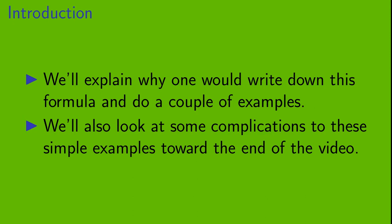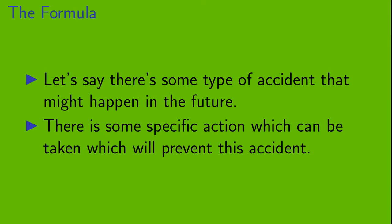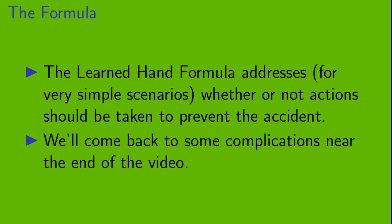We'll explain why one would write down this formula and do a couple of examples. We'll also look at some complications to these simple examples toward the end of the video. So let's say that there's some type of accident that might happen in the future, and there is some specific action which can be taken which will prevent this accident. The Learned Hand Formula addresses, at least for very simple scenarios, whether or not actions should be taken to prevent the accident.